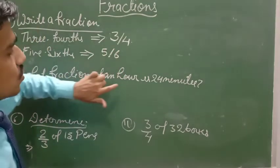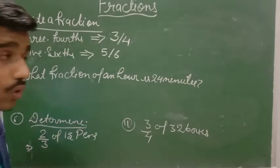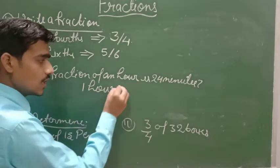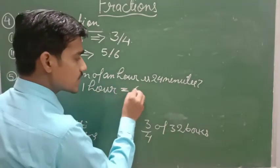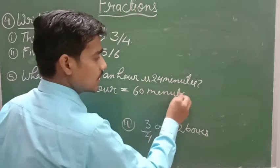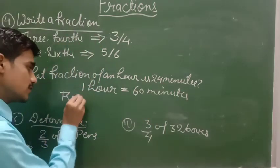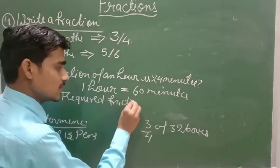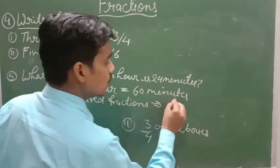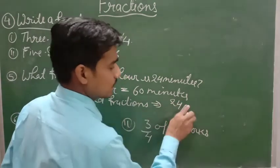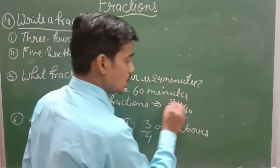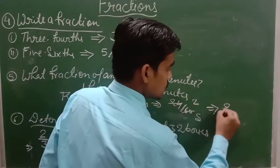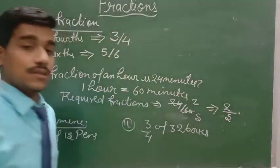And here what fraction of an hour is 24 minutes? Here 1 hour, so we know that 1 hour is equal to 60 minutes. Required fraction - required fraction is equal to 24 by 60, which simplifies to 2 upon 5. This is your answer.